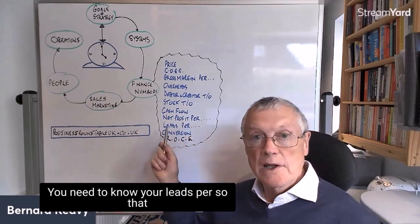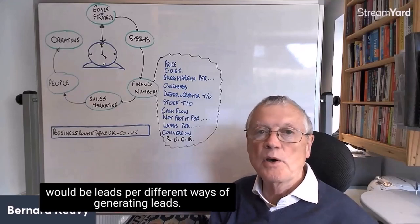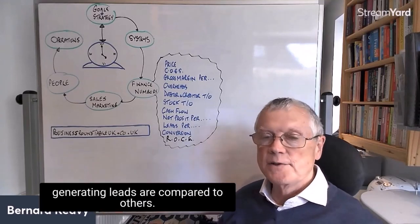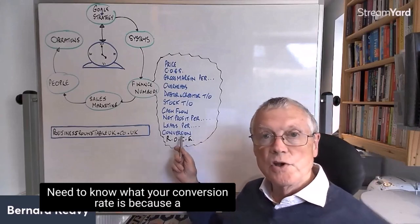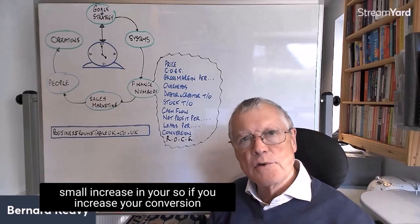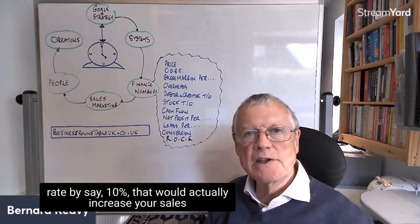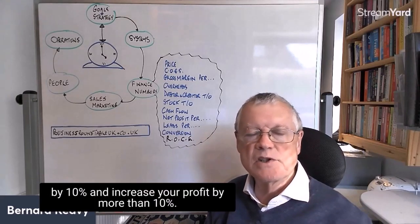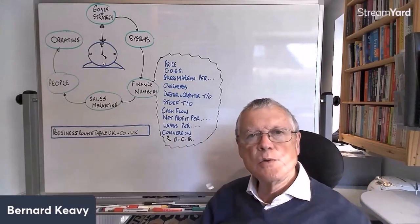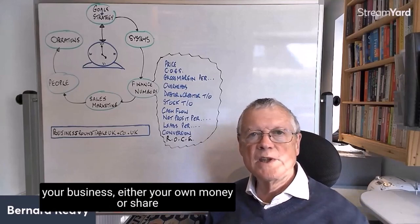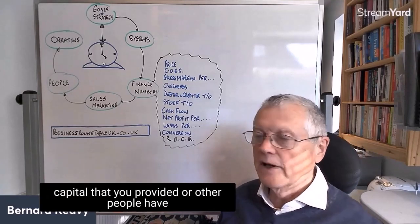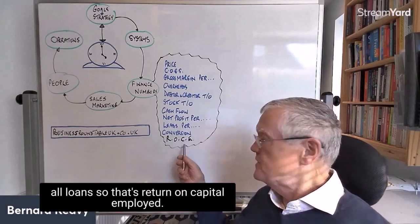You need to know your leads per different ways of generating leads — how good some methods of generating leads are compared to others. You need to know what your conversion rate is, because a small increase — say 10% — would actually increase your sales by 10% and would increase your profit by more than 10%. So that's a very important figure. And you need to know how much you're making on the money invested in your business — whether your own money, share capital, or loans. So that's return on capital employed.